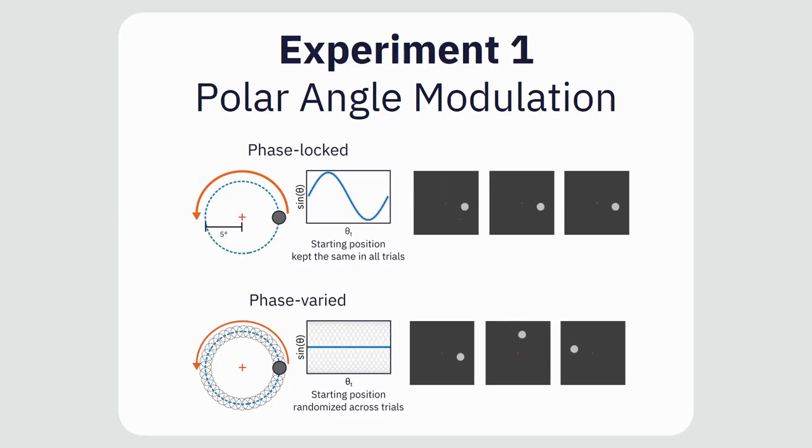In the phase locked condition, we kept the phase of the polar angle modulation constant across trials. In the phase varied condition, we randomized it across trials. We then averaged trials in the time domain and expected the signals related to the polar angle modulation to survive in the phase locked condition but cancel each other out in the phase varied condition.